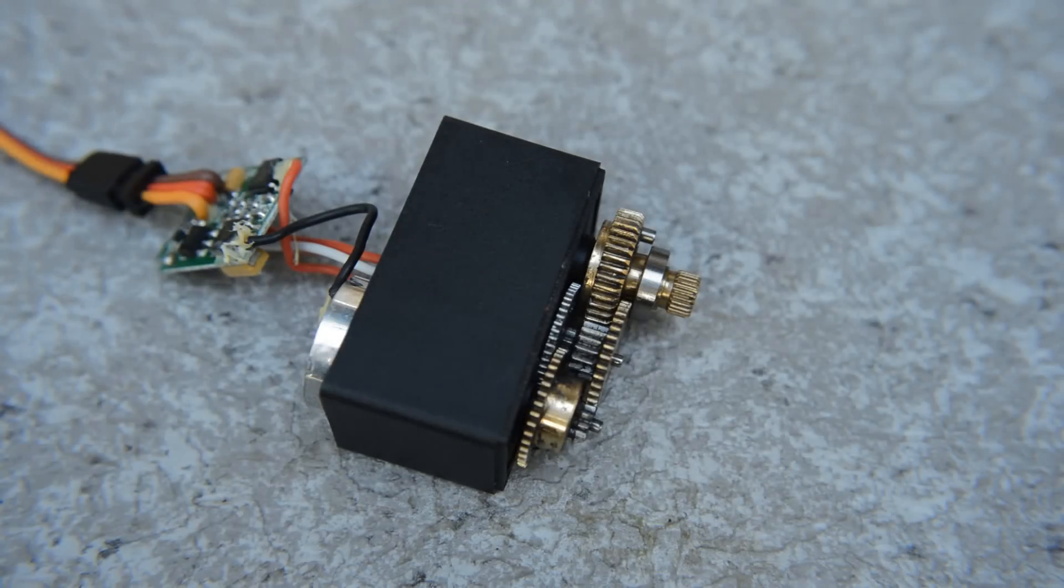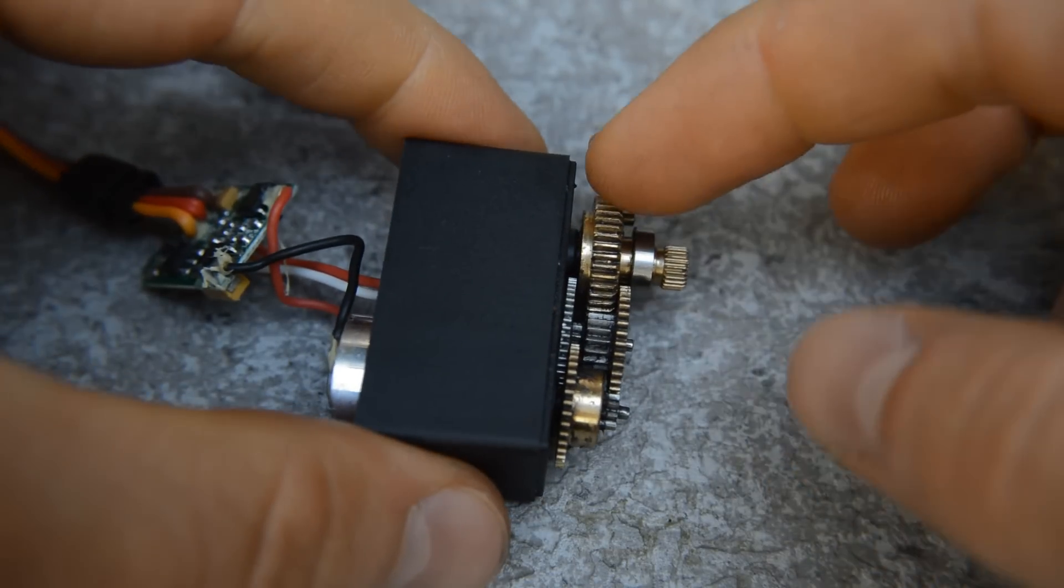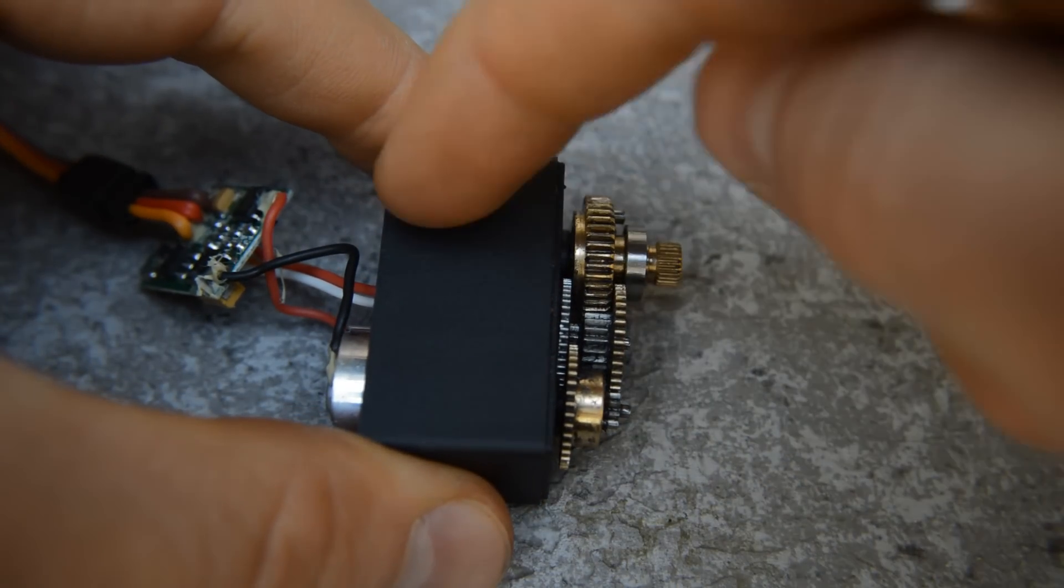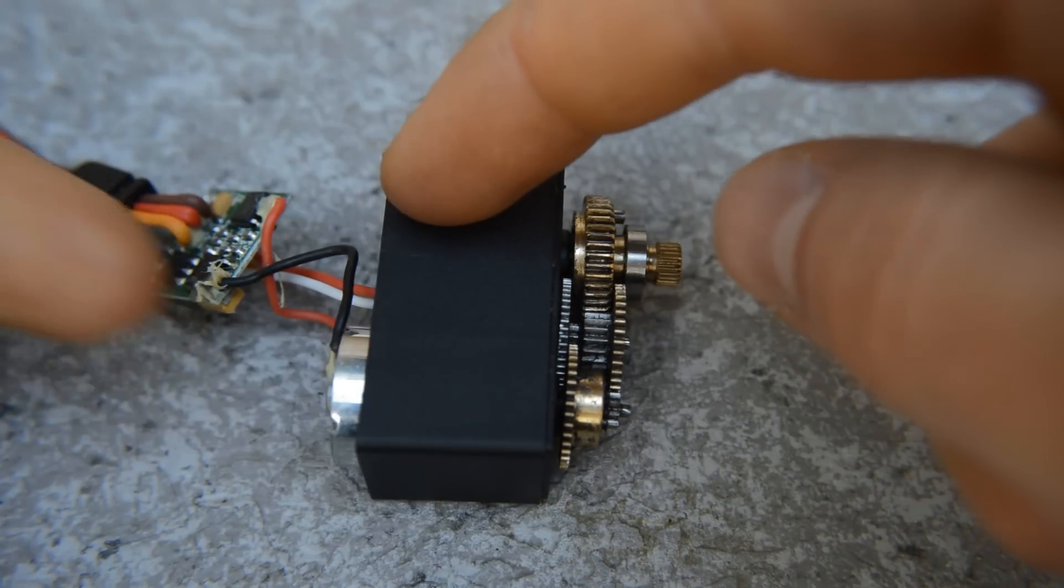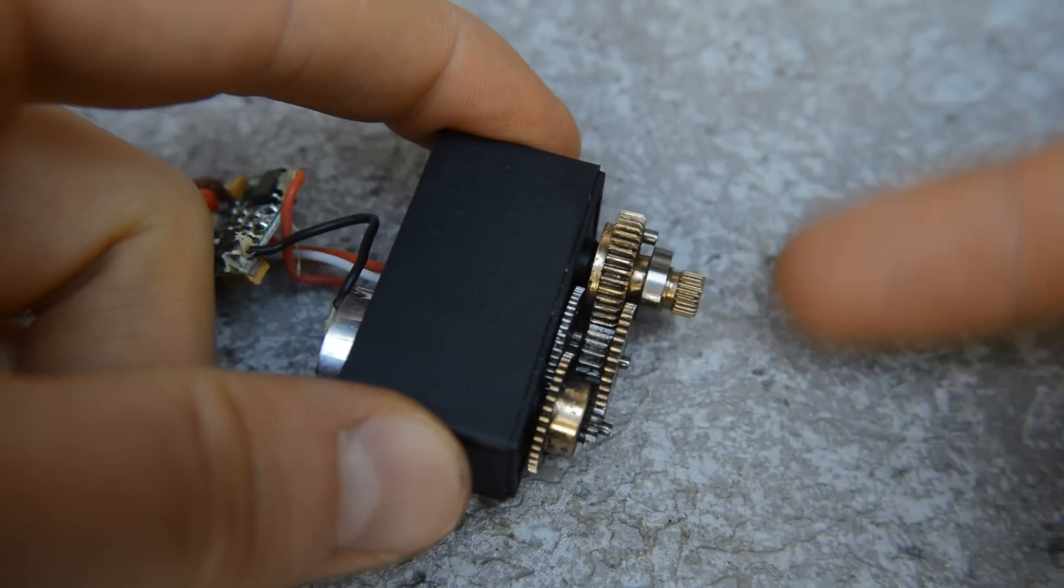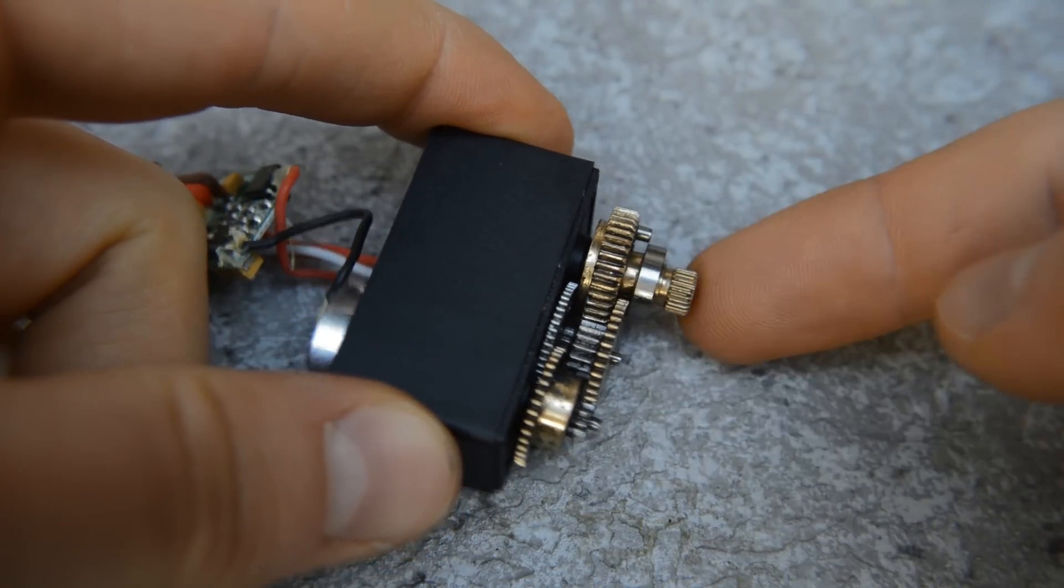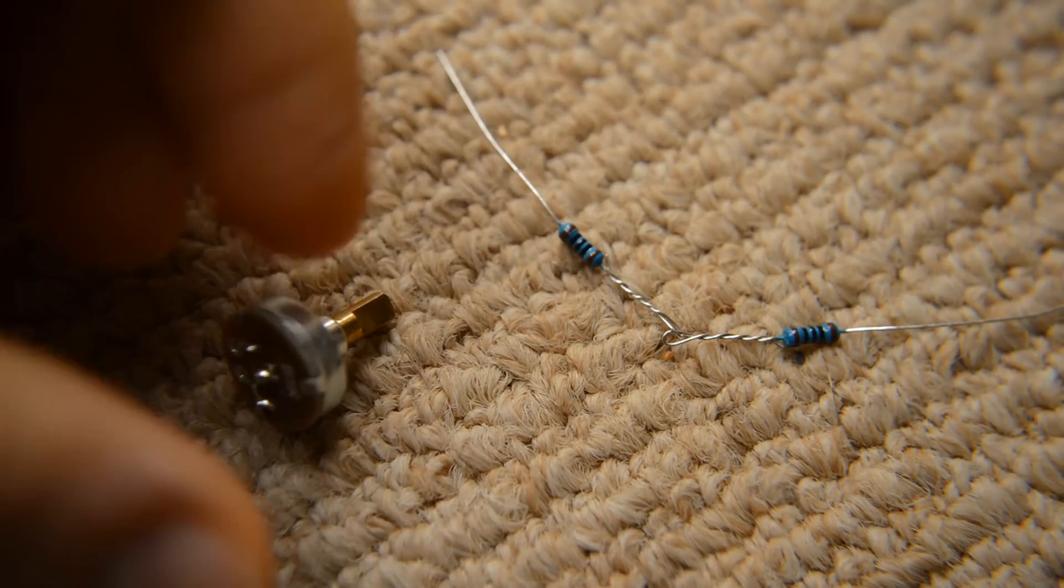So in order to modify a servo, we need to disable the feedback between the main drive gear and the potentiometer. That way when you give it a signal and it tries to correct for that signal, it'll just keep on spinning and spinning and spinning and never reach its goal.